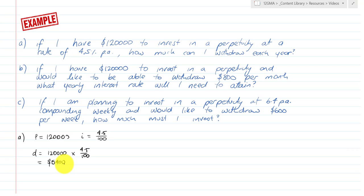Part B: If I have $120,000 to invest in a perpetuity and would like to be able to withdraw $800 per month, what yearly interest rate will I need to attain? P equals $120,000, D equals $800 per month, so I equals D divided by P, which is 800 divided by 120,000.